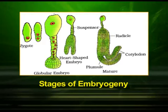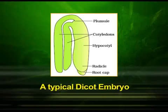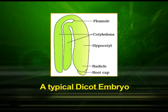In this figure, you can observe the stages of embryogeny in a dicotyledonous embryo. The zygote gives rise to the proembryo and subsequently to the globular, heart-shaped and mature embryo. A typical dicotyledonous embryo consists of an embryonal axis and two cotyledons. The portion of the embryonal axis above the level of cotyledons is the epicotyl, which terminates with the plumule or stem tip. The cylindrical portion below the level of cotyledons is the hypocotyl, which terminates at its lower end in the radicle or root tip. The root tip is covered with a root cap.